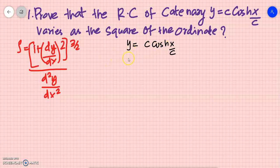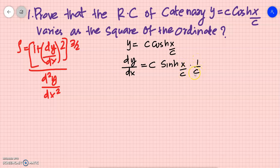So we will prove the radius of curvature for y = c·cosh(x/c). The derivative of cosh(x/c) is sinh(x/c) into the derivative of x/c. The derivative of x/c is 1/c, so dy/dx = sinh(x/c) · (1/c).